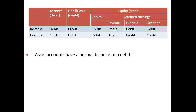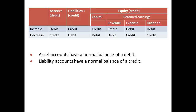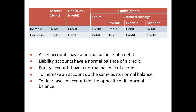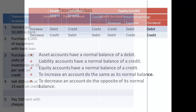To recap: asset accounts have a normal balance of a debit. Liability accounts have a normal balance of a credit. Equity accounts have a normal balance of a credit. To increase an account, we do the same as the normal balance of the account — in other words, we increase the normal balance. To decrease an account, we do the opposite of its normal balance.